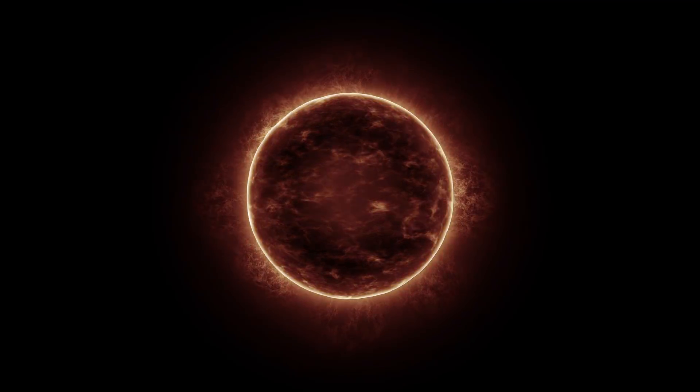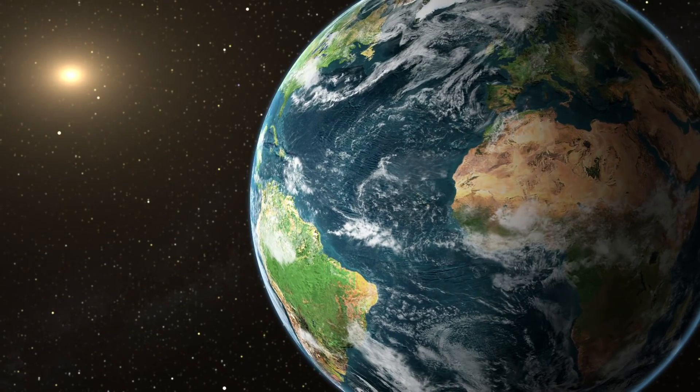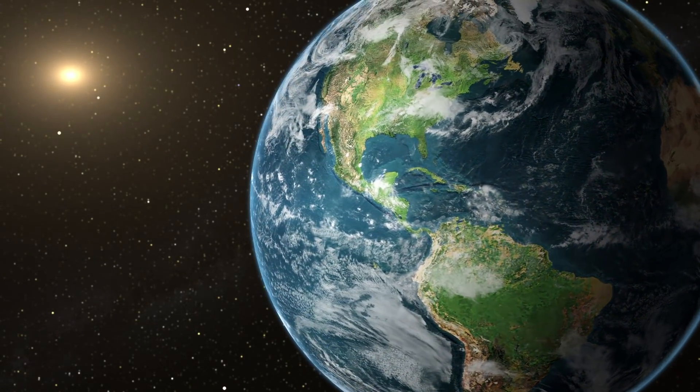It takes 8 minutes for light from the sun to reach the earth, so if the sun disappeared for 5 seconds, we wouldn't even know about it until 8 minutes later. If the sun disappeared for 5 seconds, the parts of the world that were experiencing daylight at the time would get a very quick 5 second night, where the stars are visible.